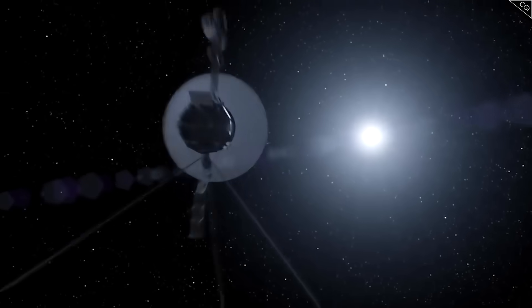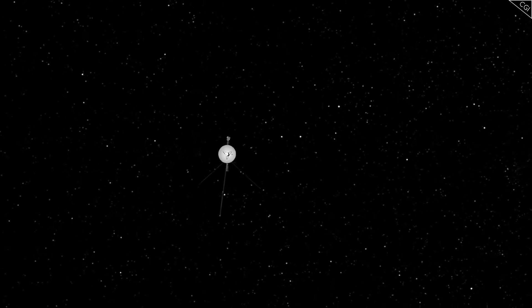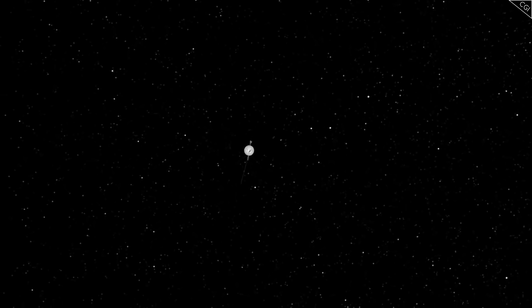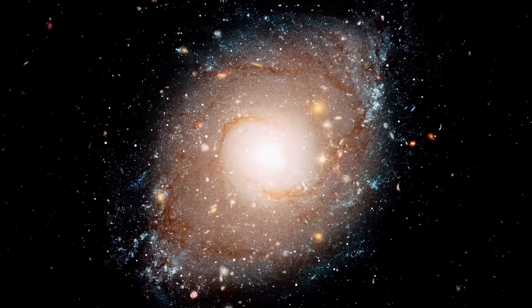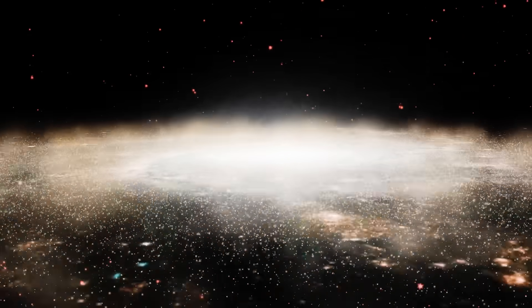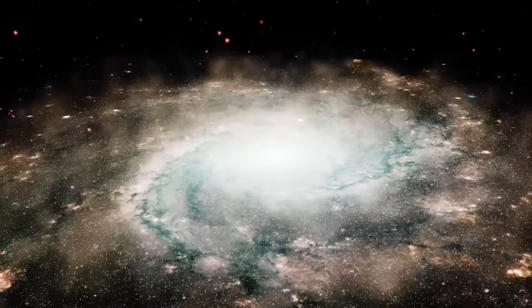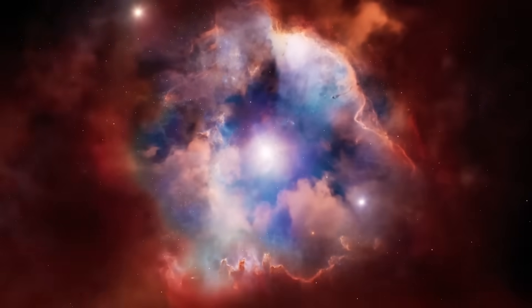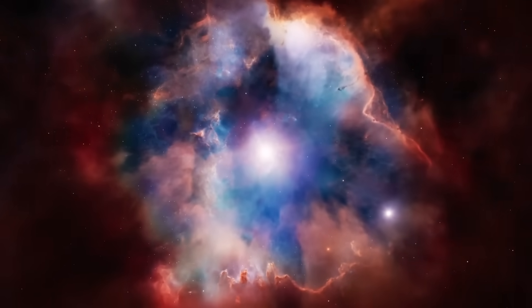As investigators debated whether this anomaly might be a fluke, Voyager 2, traveling far from its twin's location, sent back data that froze the room. It had recorded nearly identical readings, magnetic fluctuations, plasma shifts, and a faint but structured pulse signature matching Voyager 1's anomaly.